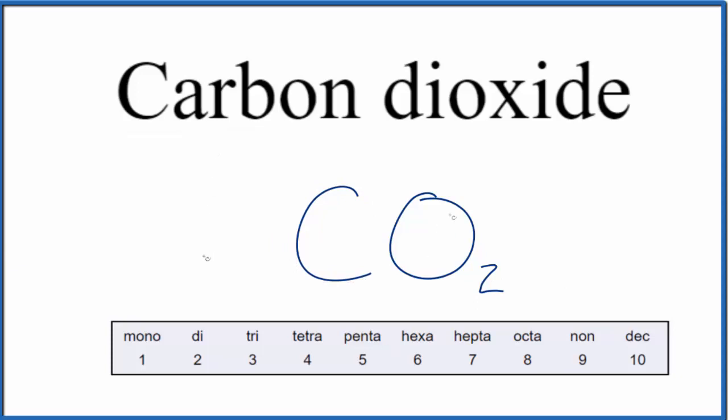Note that we only have the one carbon, but we don't write mono in front of carbon. So when we have chemical names, if we have just one element, we just write the name. We don't put mono in front of it. That's only for the second element.